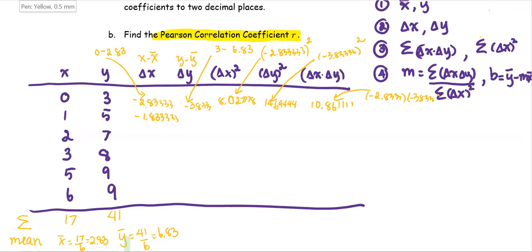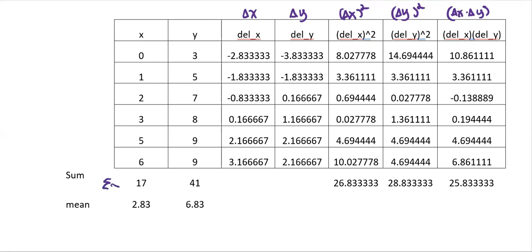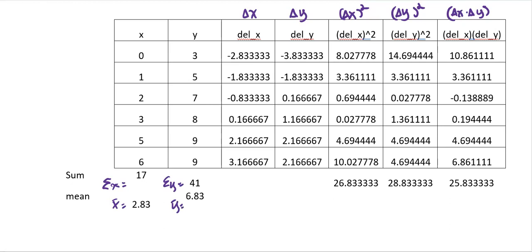This computation can be done in an Excel spreadsheet. As you see on the screen, the table is obtained using Excel. The columns shown are: delta x, delta y, delta x quantity squared, delta y quantity squared, and delta x multiplied by delta y as the last column. The summation of x equals 17, and x̄ is shown. The summation of y is 41, so ȳ is 6.83. The summation of delta x squared is 26.833333, the summation of delta y squared follows in the next column, and the summation of delta x times delta y is shown in the last column.